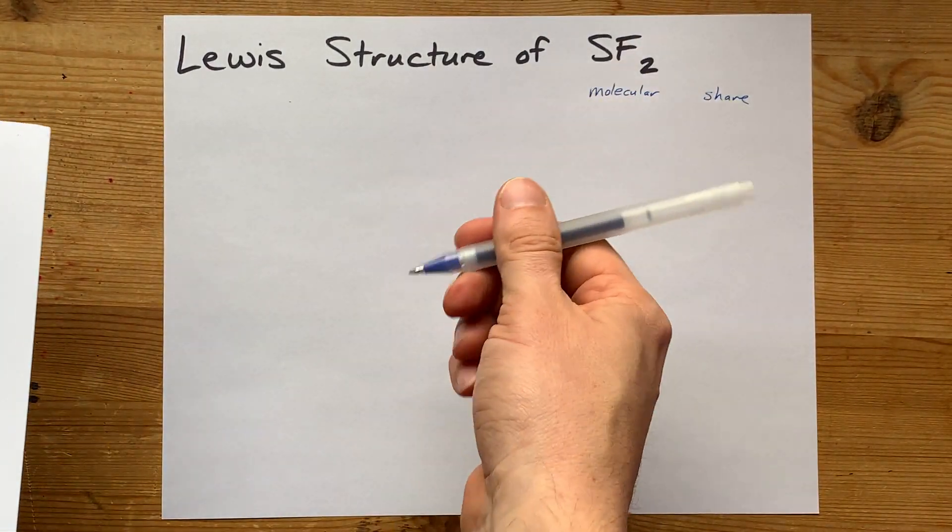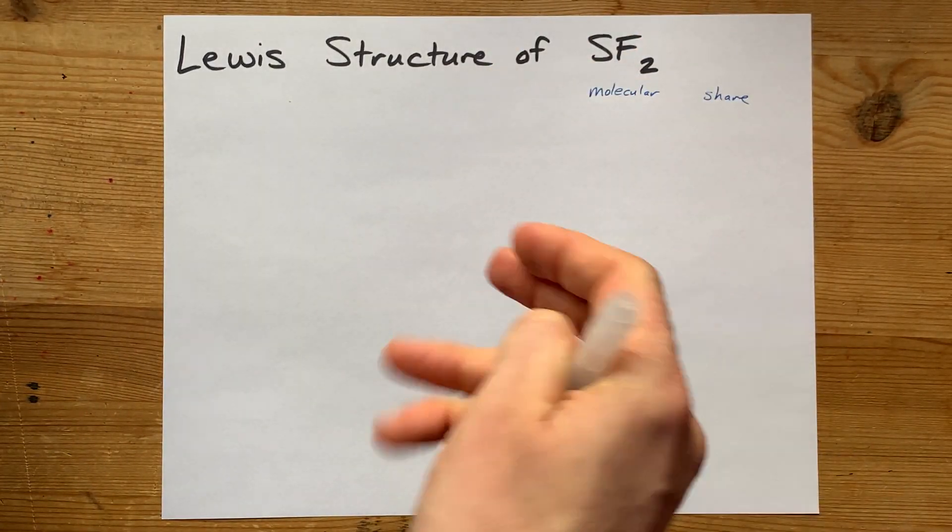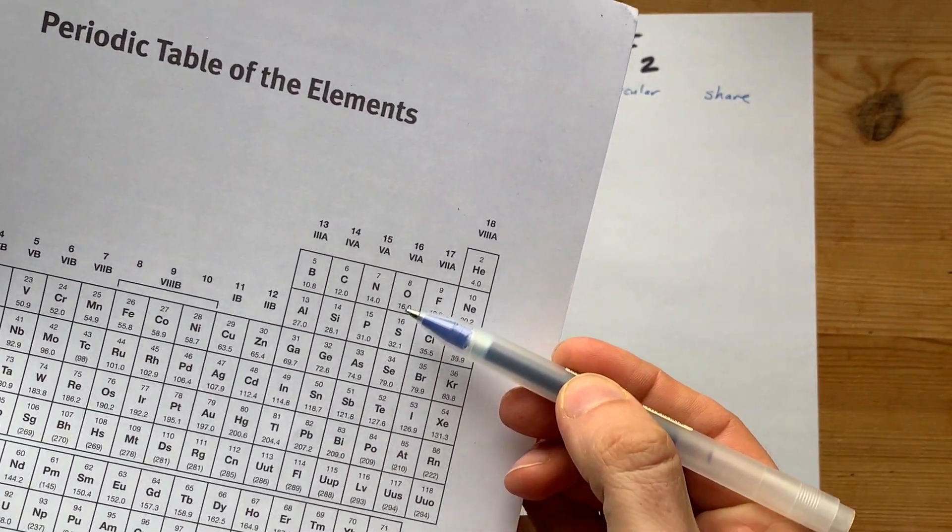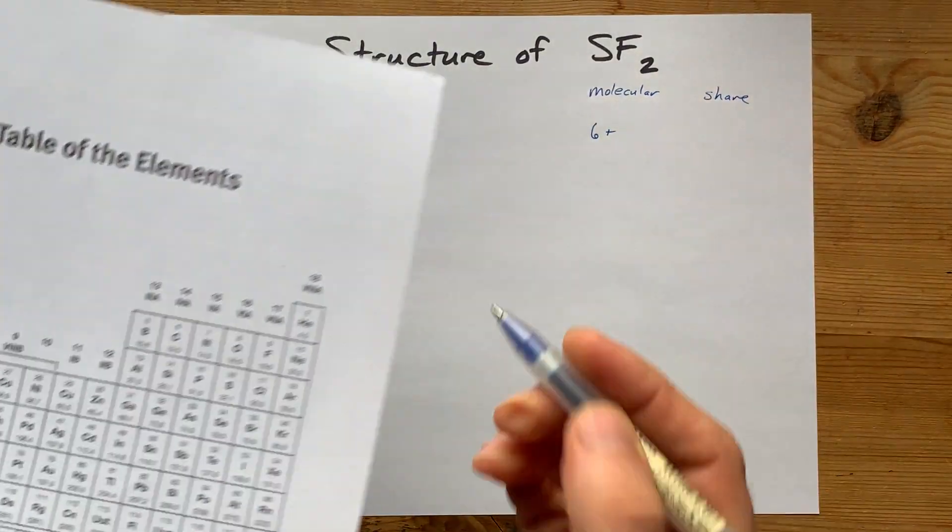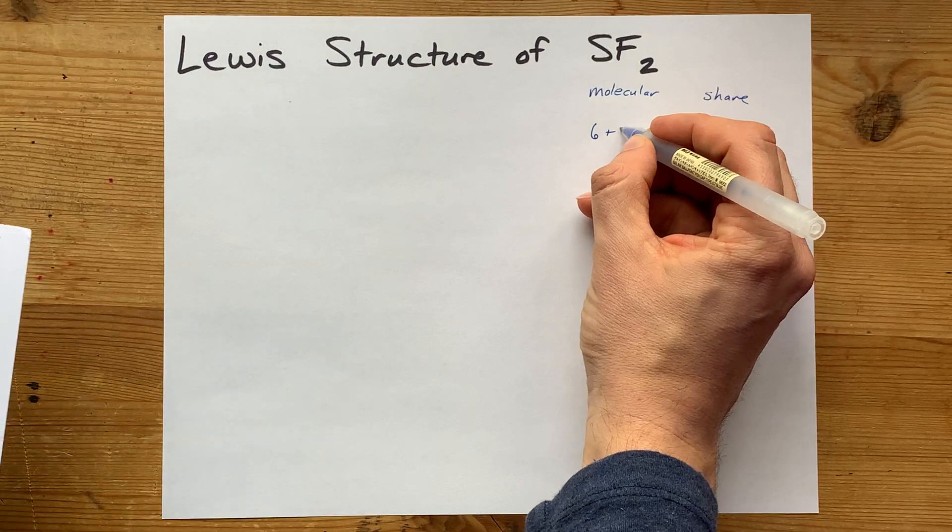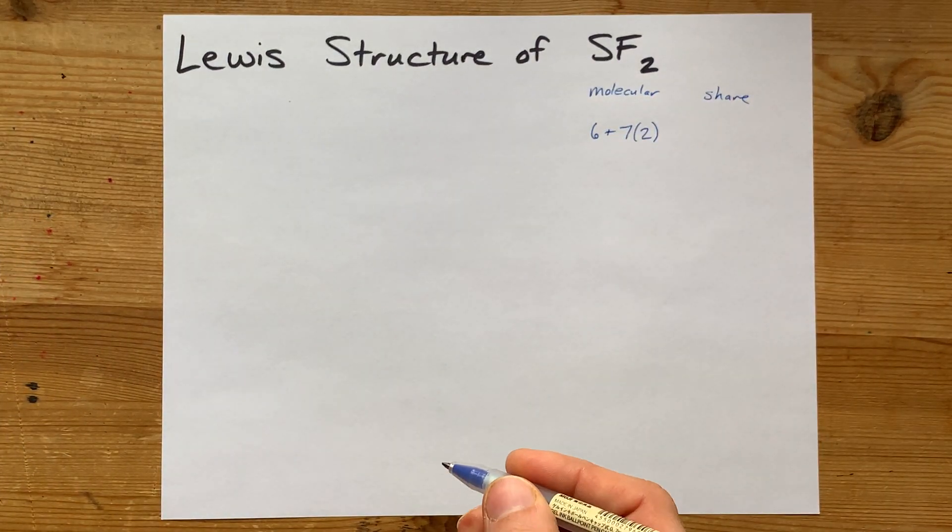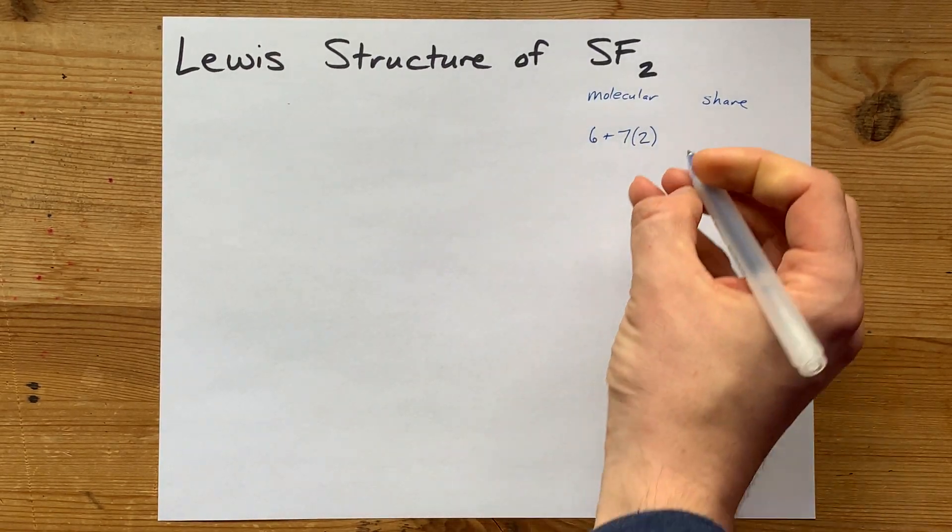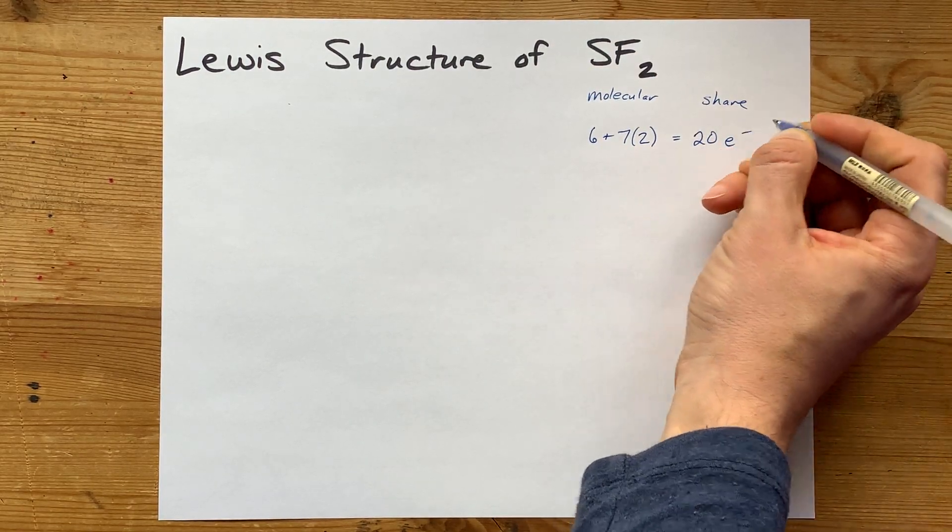I'm going to count up the number of valence electrons that this molecule will have. That's the number of electrons we're going to include in our structure. Sulfur brings six valence electrons, and each of the fluorines brings seven electrons, but there are two of them, so multiply that seven by two. Two times seven is 14 electrons from the fluorines, and the extra six from sulfur is 20 electrons total.